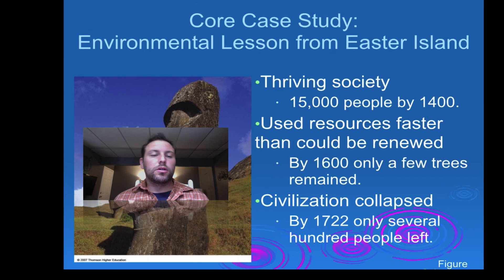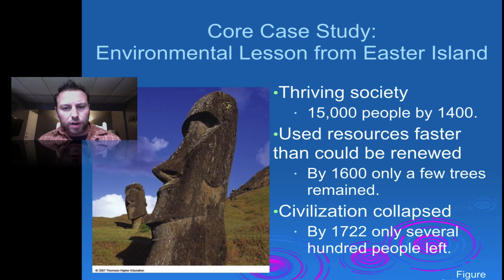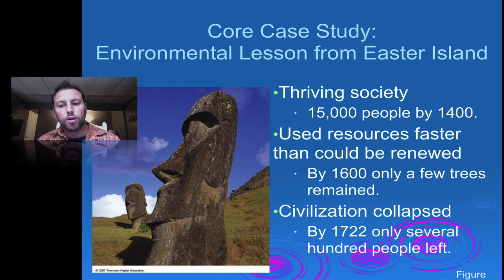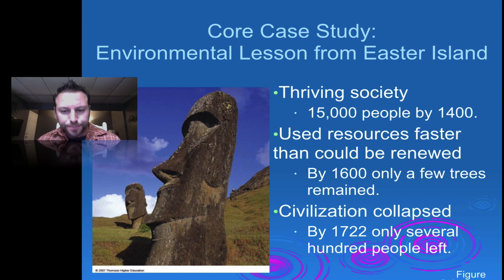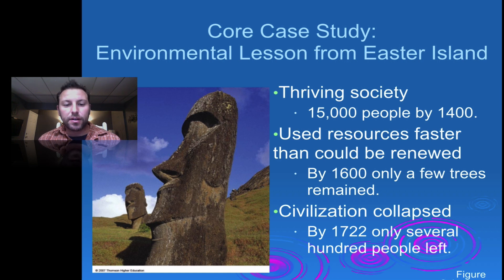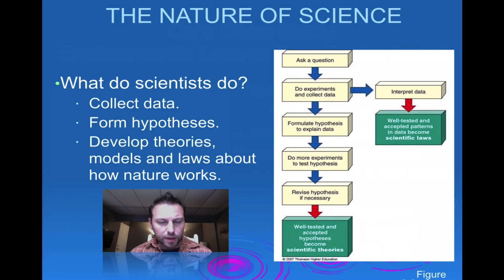We can learn something from Easter Island — a very remote island that had a thriving society of about 15,000 people around 1400. What ended up happening is, through the Polynesian rat species that was introduced there, over-resource use, and over-population, they basically caused their civilization to collapse. We can learn from those lessons on that very small, isolated island and apply them to the bigger picture.